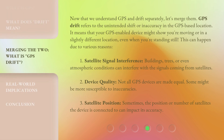Now that we understand GPS and drift separately, let's merge them. GPS drift refers to the unintended shift or inaccuracy in the GPS-based location. It means that your GPS-enabled device might show you're moving or in a slightly different location, even when you're standing still. This can happen due to various reasons.